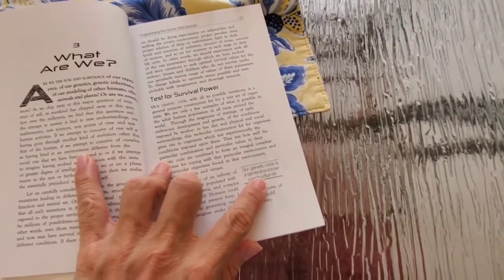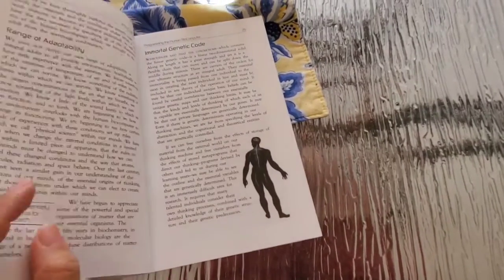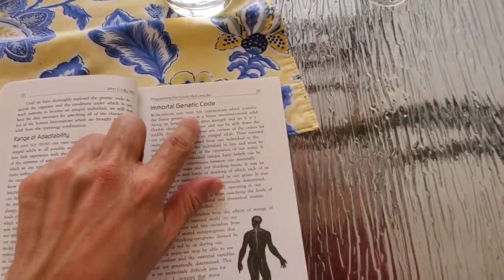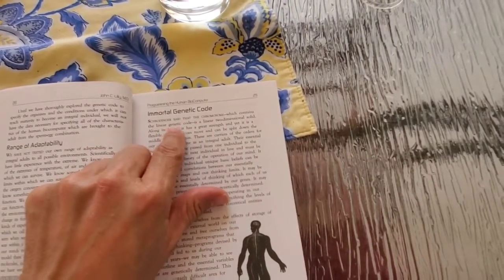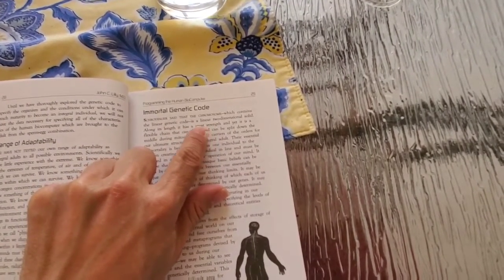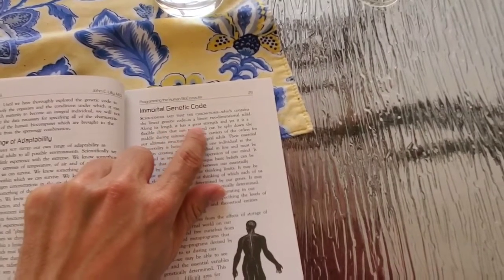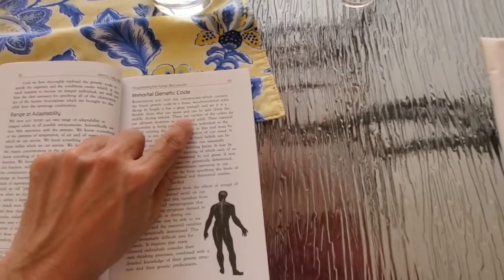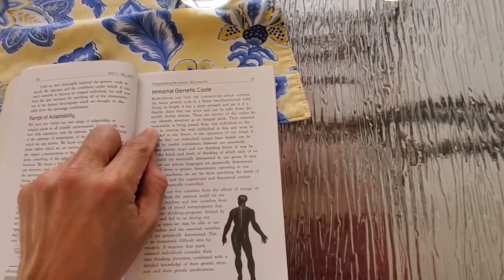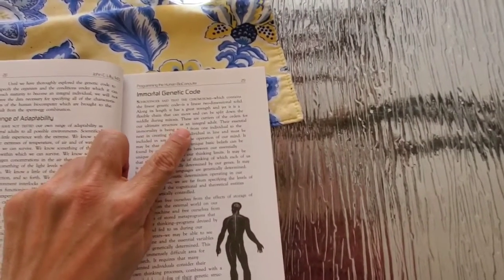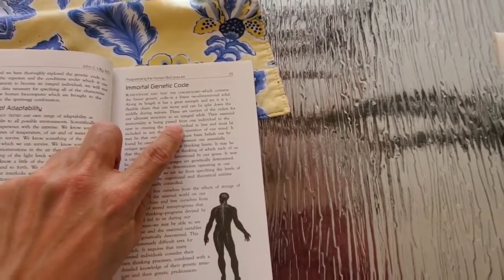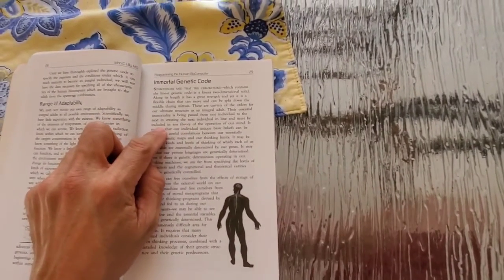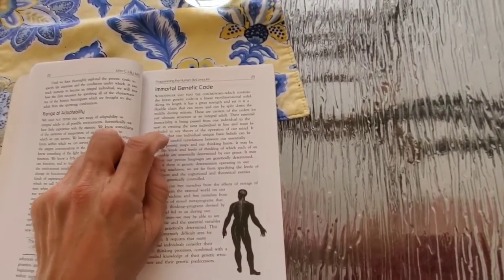Our genetic code is a general purpose construction kit. Immortal genetic code. Schrodinger said that the chromosome which contains the linear genetic code is a linear two-dimensional solid. Along its length it has great strength and yet it is a flexible chain that can move and be split down the middle during mitosis. There are carriers of the orders for our ultimate structure as an integral adult. Their essential immortality is being expressed from one individual to the next in creating the next individual in line and must be included in any theory of the operation of our mind.